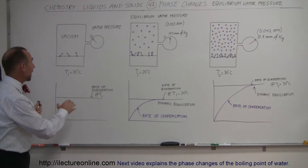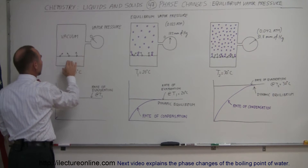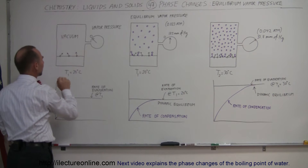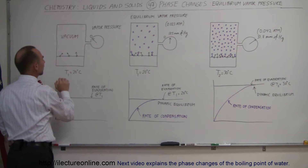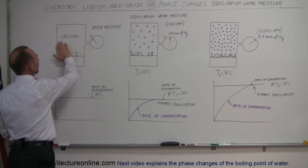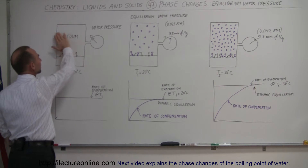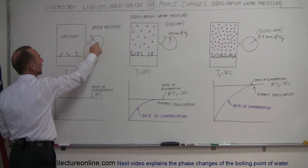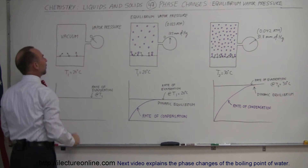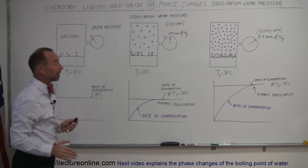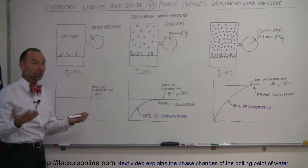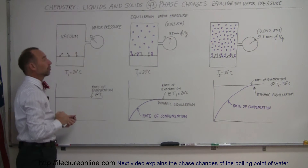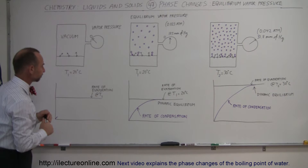Let's say we have an enclosed container with some water at the very bottom. Let's say we heat up the water to 20 degrees centigrade. Let's say there's a vacuum up here, meaning there's no air, no molecules whatsoever, and we have a pressure gauge right there, and the pressure gauge indicates zero pressure — zero millimeters of mercury or zero atmospheres.